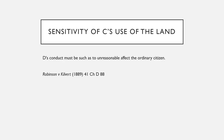Then we look at the sensitivity of the claimant's use of the land. For it to be a nuisance it has to affect the ordinary citizen — it has to be so unreasonable that anyone would be affected. In Robinson, the claimant had exceptionally delicate papers stored on their land and any difference in temperature would ruin them. It was held that they weren't actually the ordinary citizen; they were a sensitive user of that land.